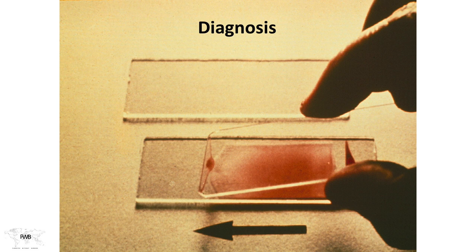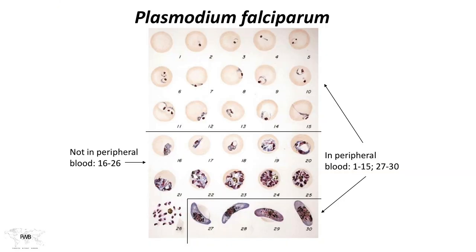Blood smears take a little time to prepare, which can have some impact on treatment initiation. In the peripheral smear you won't see all forms — certain ones are detected and these help identify the subspecies.